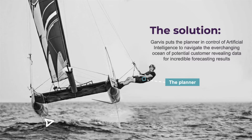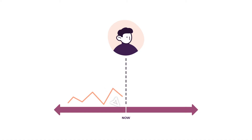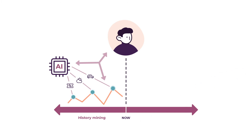The solution is to put the planner in control of artificial intelligence to navigate the ocean of data currently available. With Garvis, the actual sales of an organization have a relation with the events that happened — promotions, weather, holidays, seasons. The line left of the dotted line represents the actual sales in the past. The dots represent the events. In Garvis, there is a built-in enterprise model to which frame of reference the events can be connected.